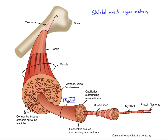Each of these fascicles is separated by a connective tissue layer. The muscle itself has a connective tissue layer called the fascia surrounding it. If we take a fascicle and look within it, we find that it is comprised of individual muscle fibers — a fascicle is actually a bundle of individual muscle fibers, which are the muscle cells themselves.